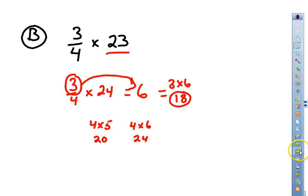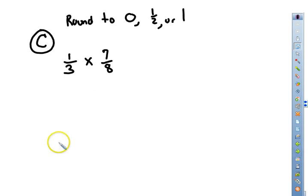So now let's look at our next problems. And it is rounding to the nearest 0, 1/2, or 1 whole. We have already done this last week. But now you're going to do that to 2 fractions, and then multiply them together.